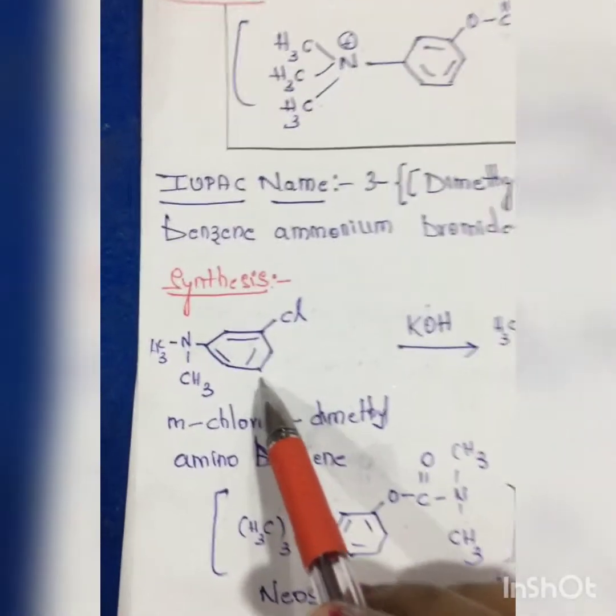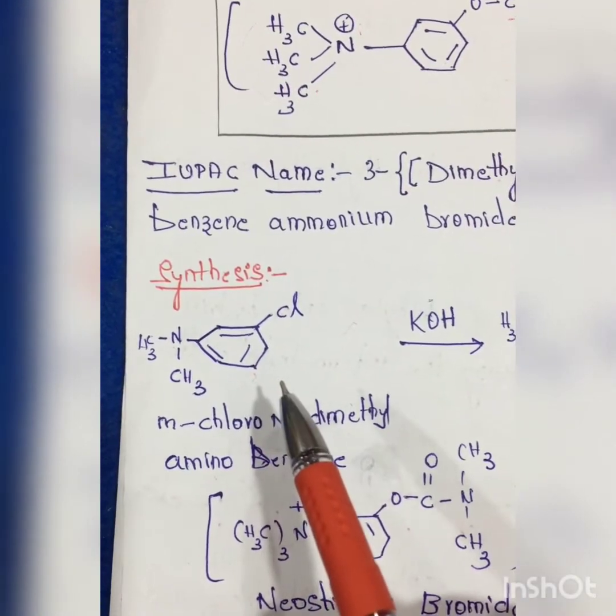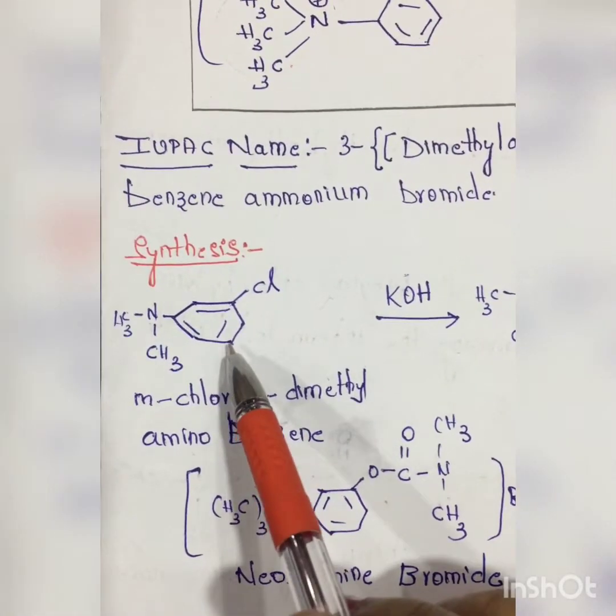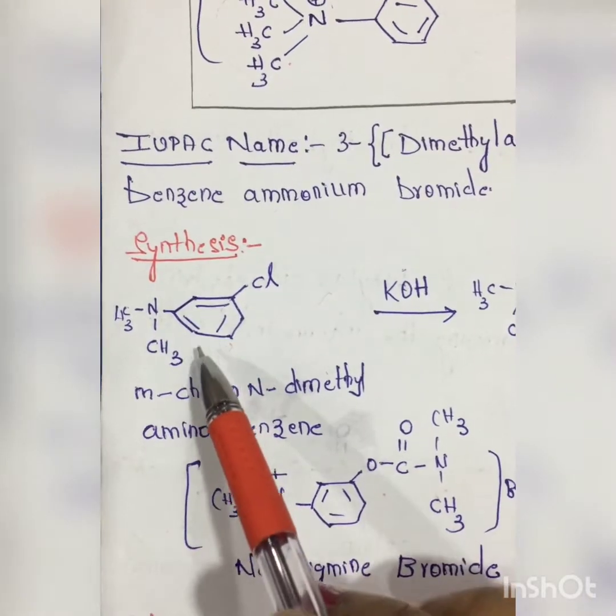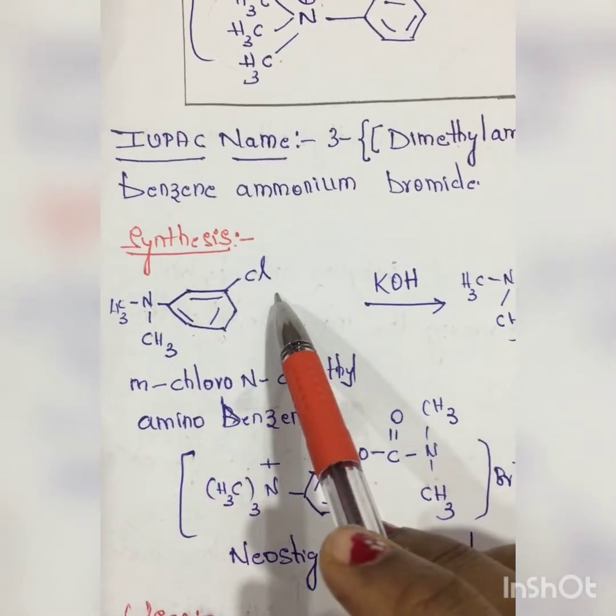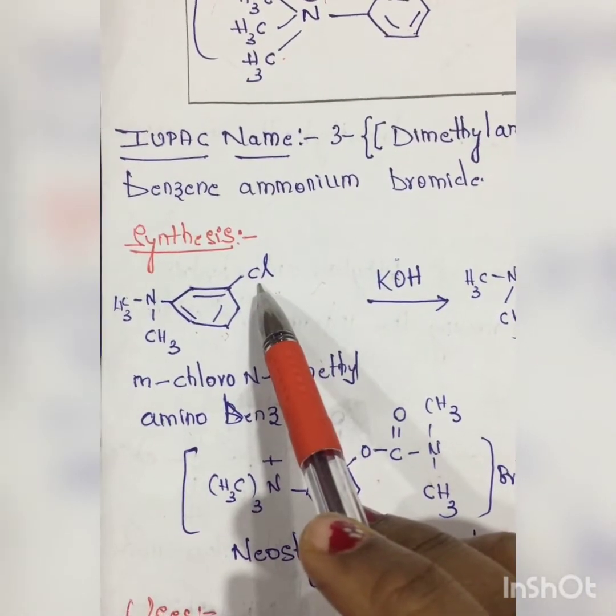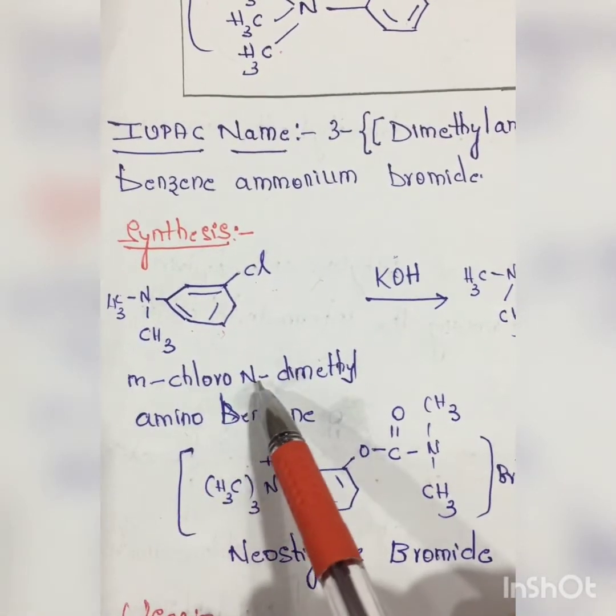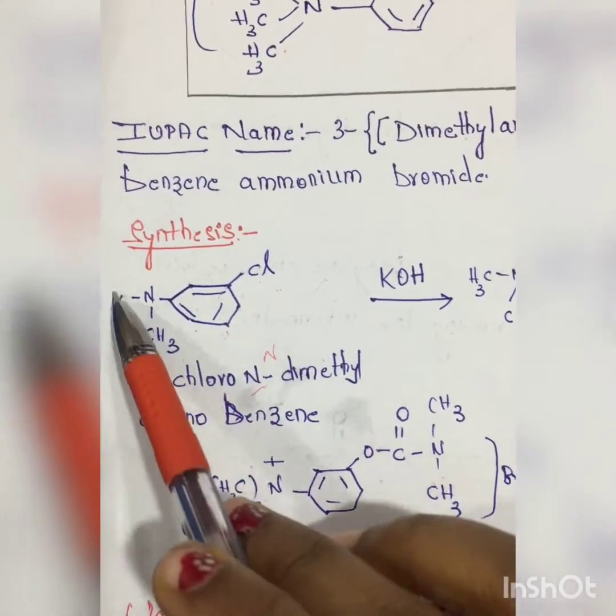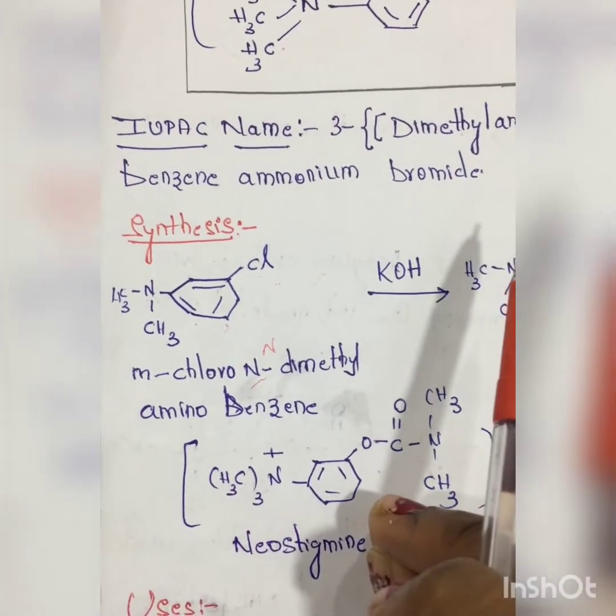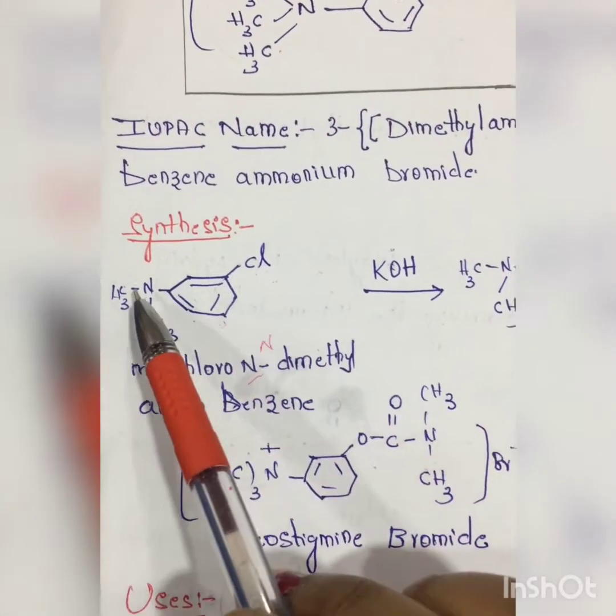For the synthesis, first this is benzene. This is the substituent - obviously these two will be the ortho positions, these will be the meta positions. So meta-chloro-N,N-dimethylamino benzene - the starting product will be meta-chloro-N,N-dimethylamino benzene.